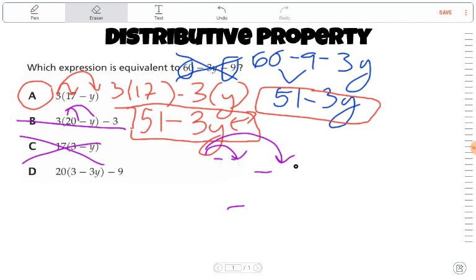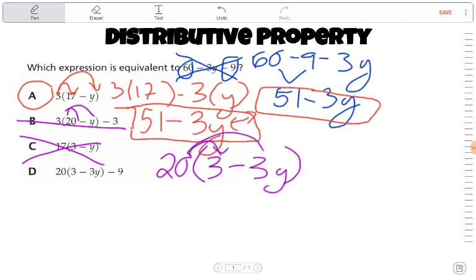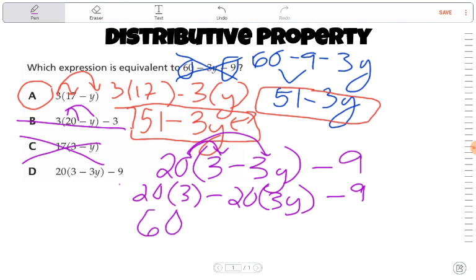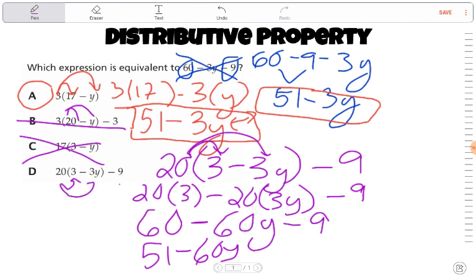And now let's just check and see if D will give us the same answer. So D, we have 20, and then I'm distributing that to the 3 minus 3y, but I'm not distributing that to that minus 9, so I'll keep that after. I have 20 times 3 minus 20 times 3y, and then I have that minus 9. 20 times 3, that is 60. 20 times 3y, that's 60y. I need that minus sign, and I have minus 9. The 60 and the minus 9, that gives us 51. We have 51 minus 60y. So what they're hoping you'll do there is you won't distribute that 20 to both things inside. But when you do, you'll see that you don't get 3y, you get 60y.